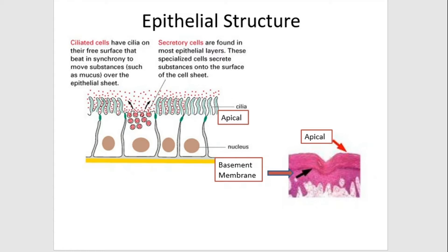All epithelial tissue is avascular — it does not have blood vessels. Epithelial cells receive nutrition from the underlying connective tissue, which contains blood vessels, by diffusion through the basement membrane. Another property of epithelial tissue is the availability of intercellular junctions between lateral surfaces of neighboring cells, and also junctions between the basal cytolemma and the basement membrane. Epithelial tissue also has a high ability for regeneration.